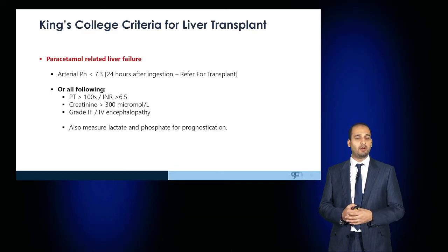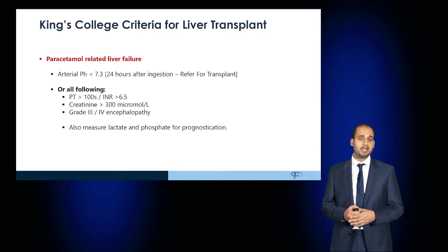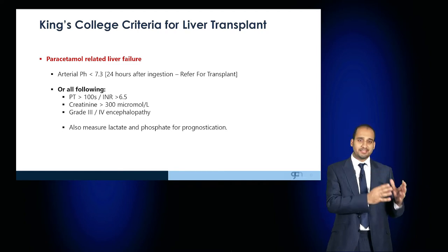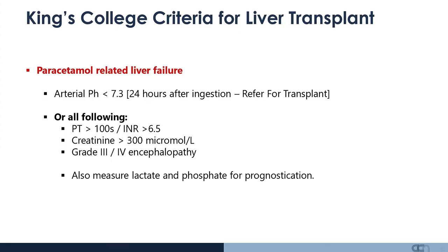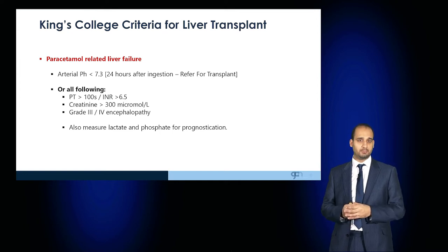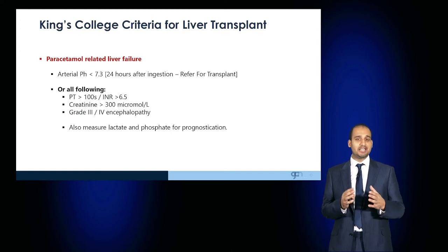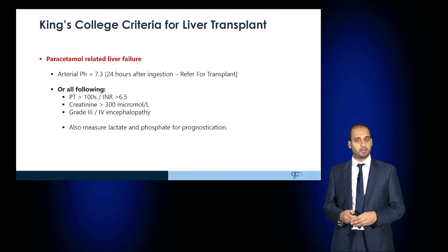Another criteria to be aware of is the King's College criteria for liver transplantation, with two important subsets: paracetamol-related liver failure and non-paracetamol-related failure. For paracetamol overdose, if the arterial pH is less than 7.3 at 24 hours after ingestion, the patient should be referred for transplantation, or if they have all three of: prothrombin time more than 100 seconds or INR more than 6.5, creatinine more than 300 micromoles per litre, and grade 3 or 4 encephalopathy. Lactate and phosphate are measured purely for prognostication.